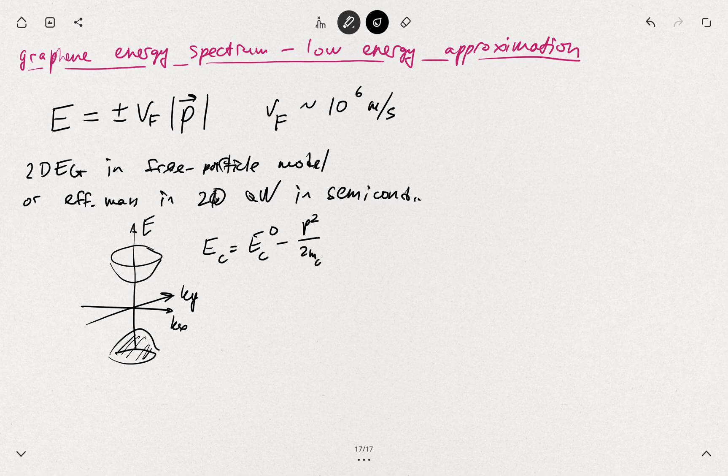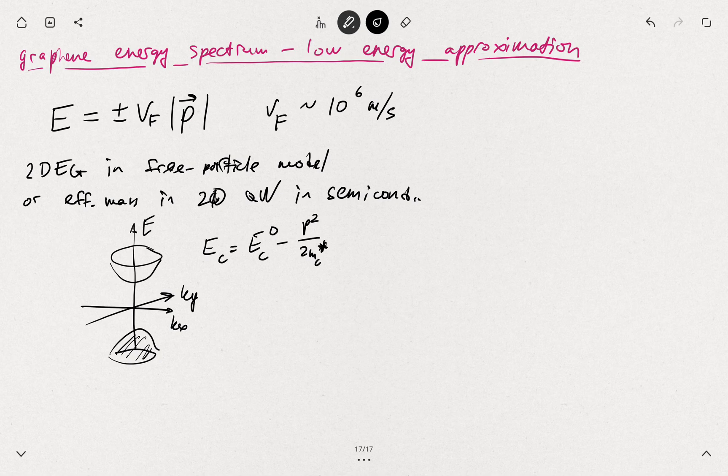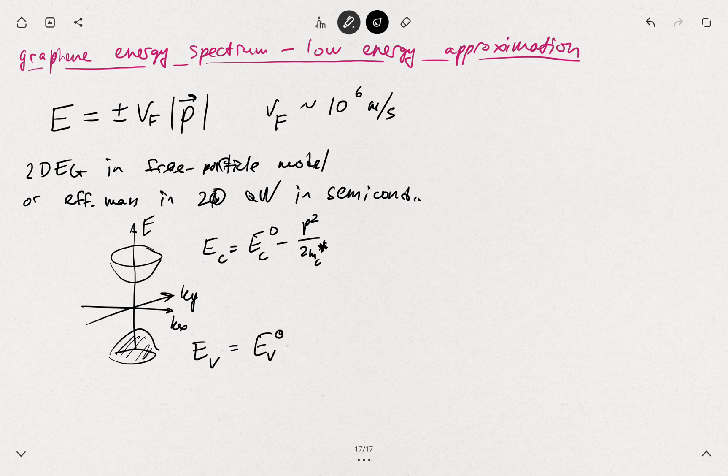p² over 2m conduction star. So we have this effective mass. There can be different curvatures. For the valence band, it's the ground state minus p² over 2m valence star.